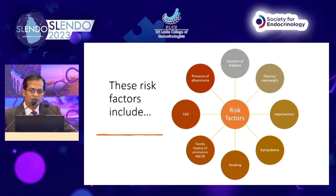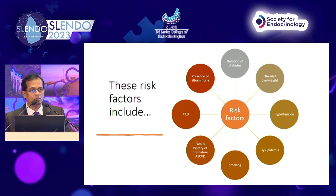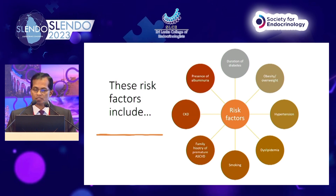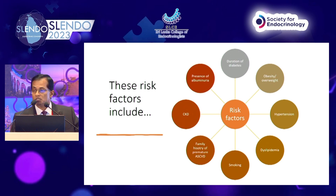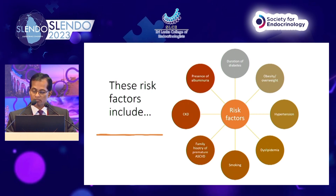If you look at the risk factors for ASCVD in diabetes, duration of diabetes is a major risk factor — if you put it into any risk engine there is a huge increase. Also obesity, hypertension, dyslipidemia, smoking, family history of premature deaths, CKD, and the presence of albuminuria are all risk factors for cardiovascular disease in diabetes.